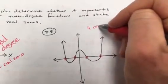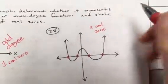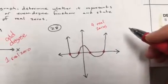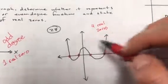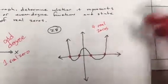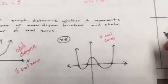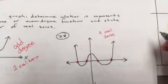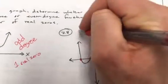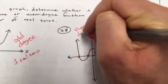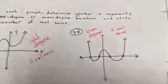This one crosses the x-axis four times — four real zeros. Now look at the end behavior: it is going up and going up. Same direction, not opposite — that is an even degree function.